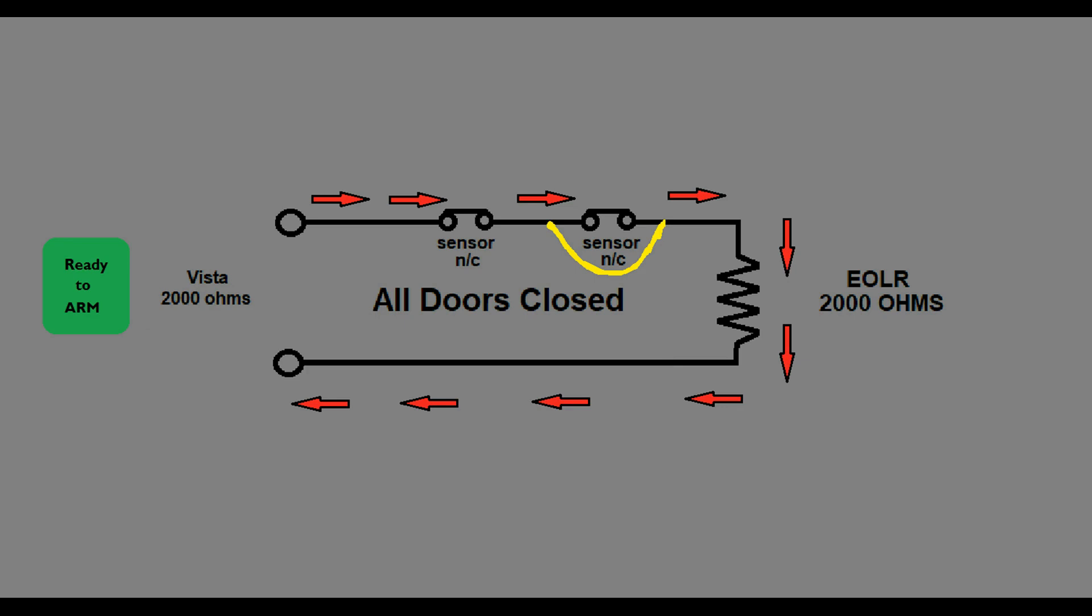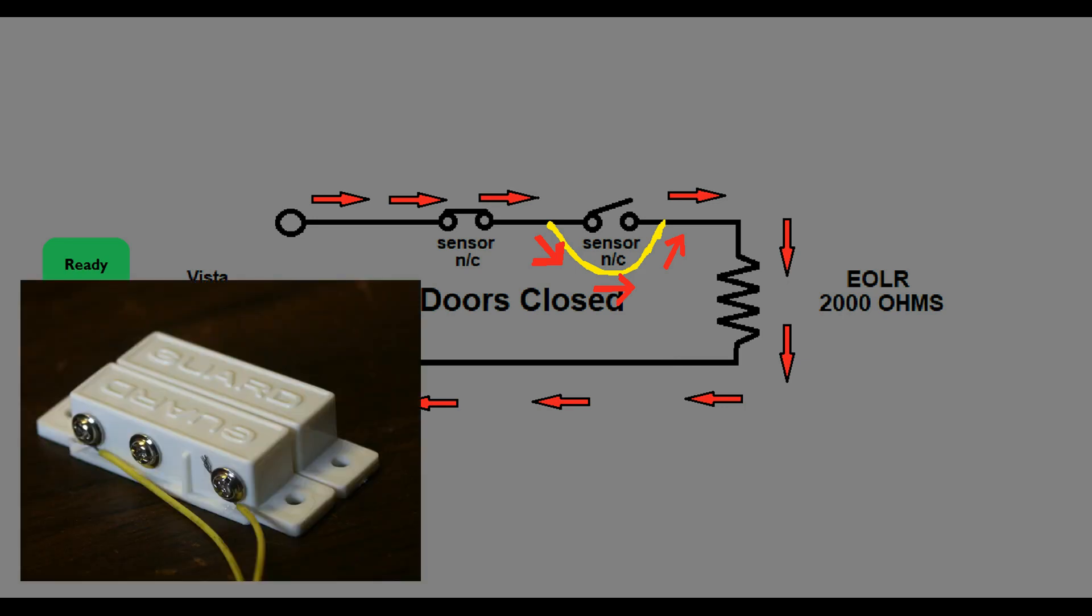However, what if there's a short across one of your sensors? When the sensor opens, the current simply goes around the short and continues on like normal. The alarm panel will not see the open sensor. So, with this information in mind, it would probably be wise to ensure that when you install a sensor, the electrical contacts are not accessible to the general public.